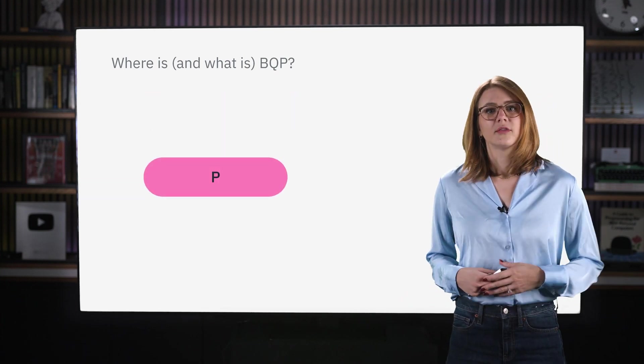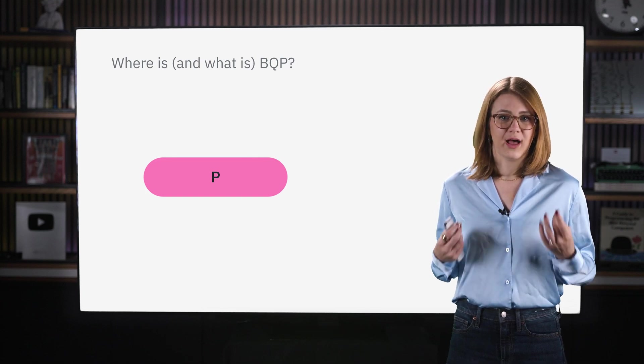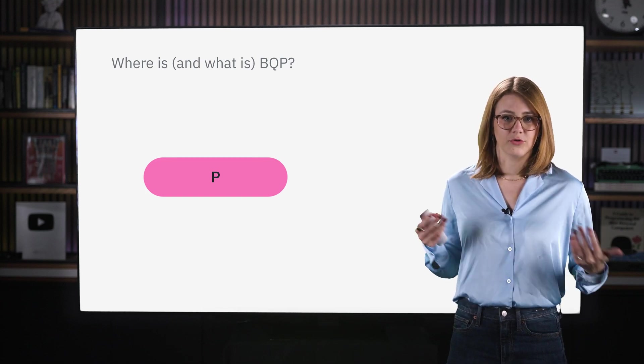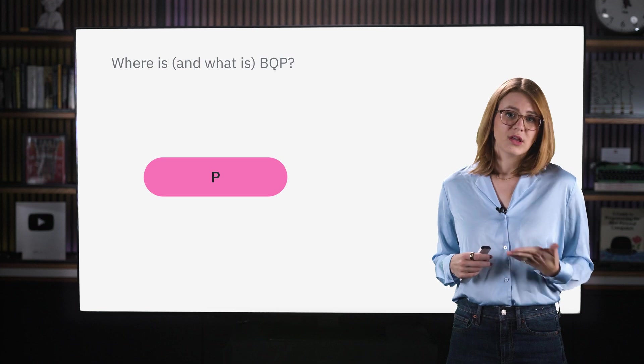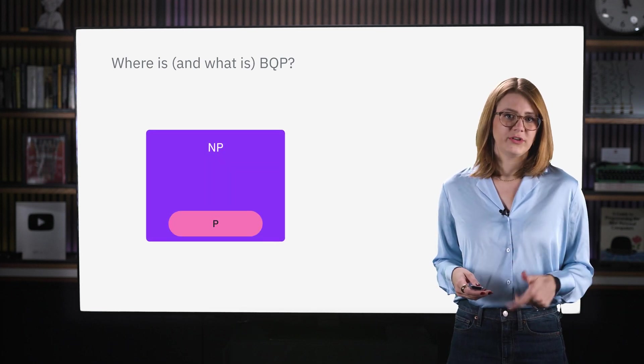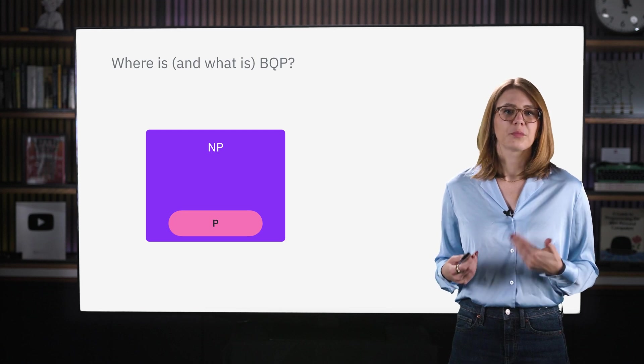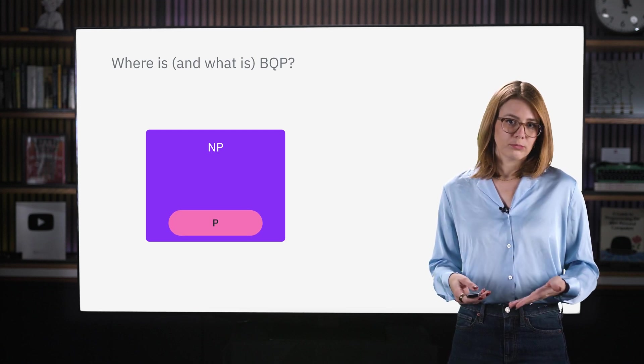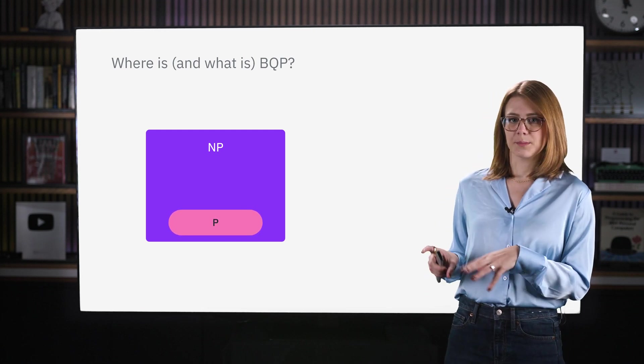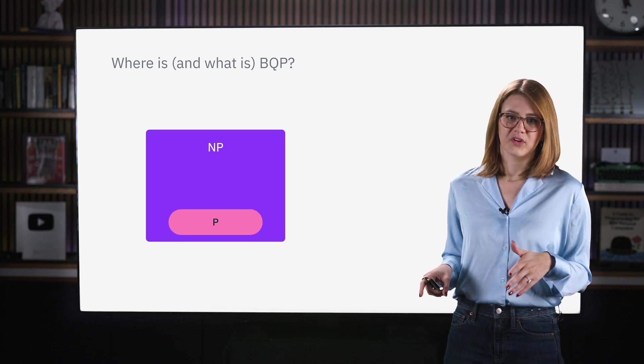P problems. These are problems that can be solved in polynomial time as the problem scale increases, meaning that they are easy to solve. The next, more difficult type of problem is NP problems, which stands for non-deterministic polynomial. These are problems whose answers can be verified in polynomial time, but not necessarily solved.